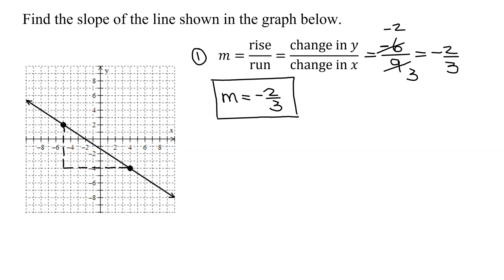Now what we can do is quickly check that. If I start at this point here, if I go down 2 and to the right 3, do I get another point on the graph? Yes — down 2, right 3. Down 2, right 3. So that looks like it's correct. And that, I think, is the shortest method to find the slope of a line — just to read off the rise and the run. But there is another method that some students like.